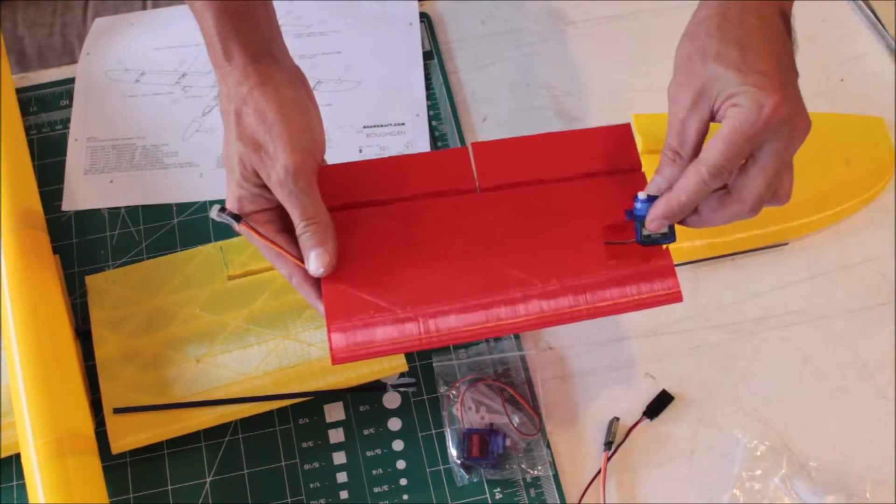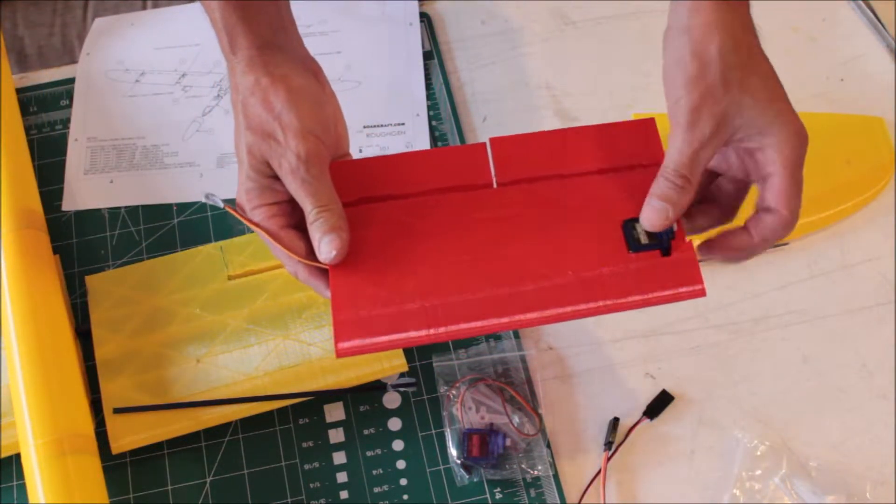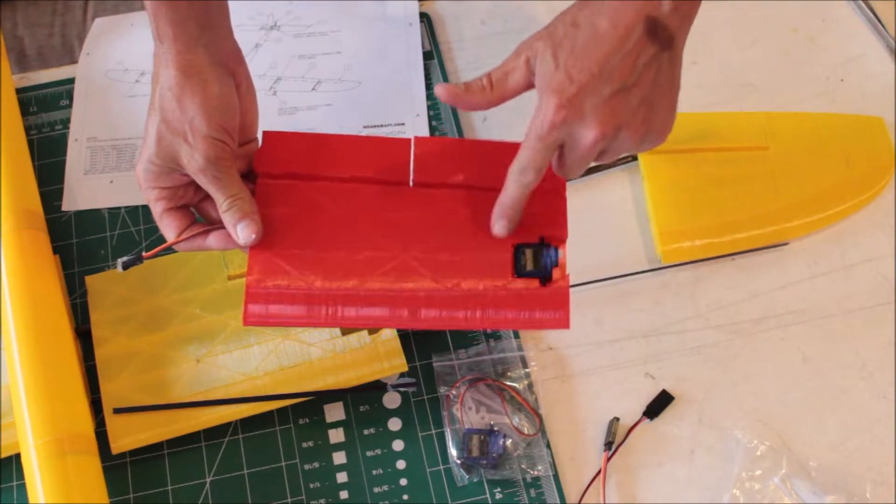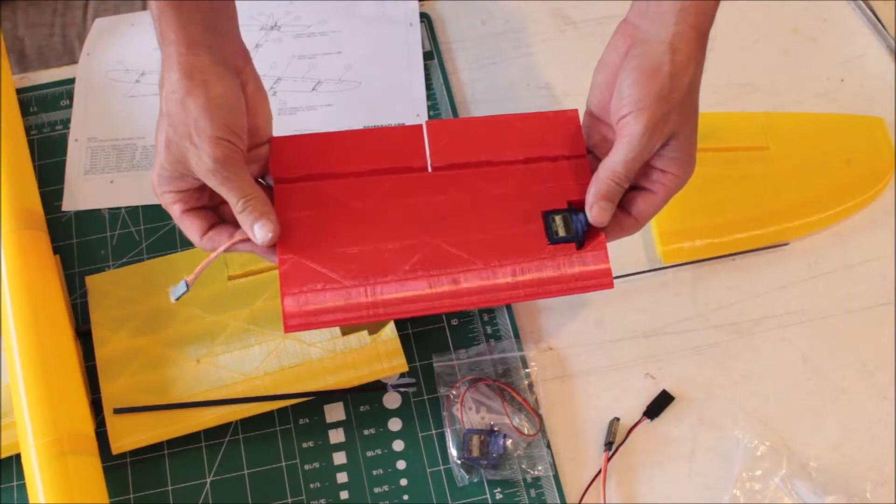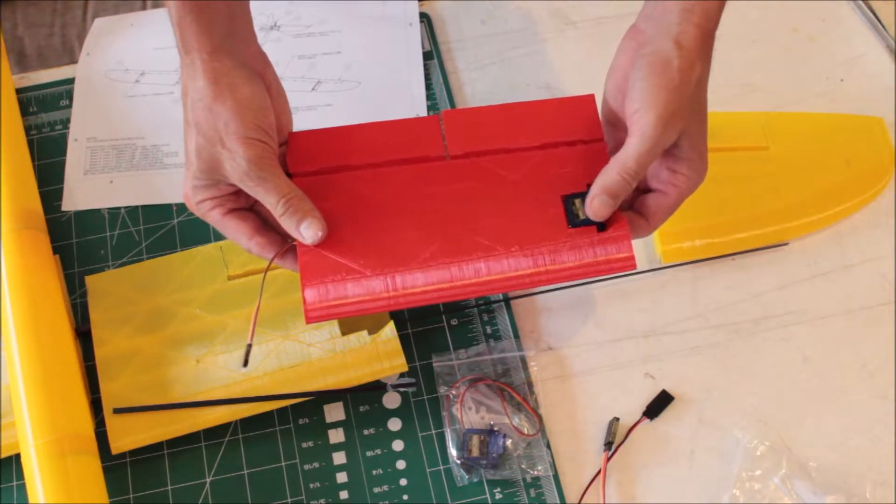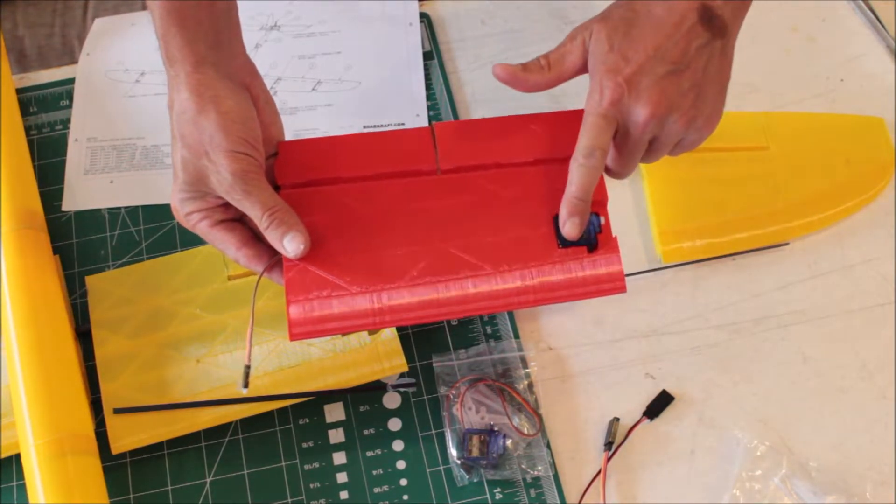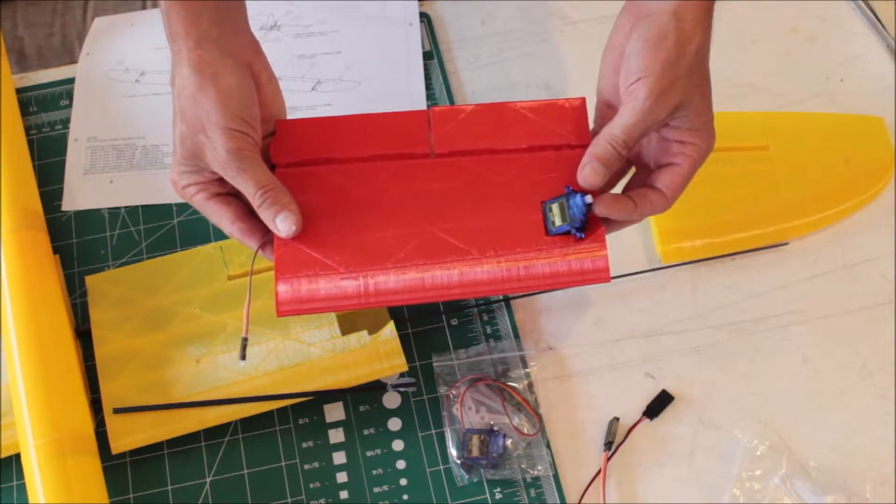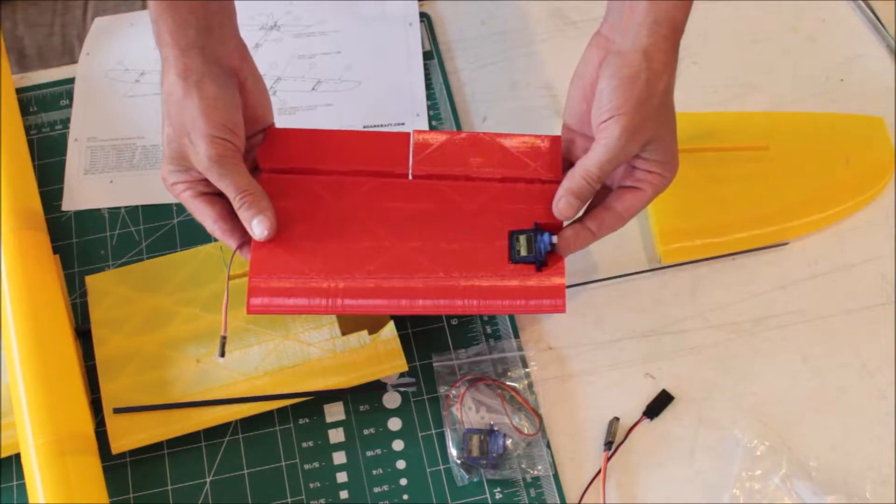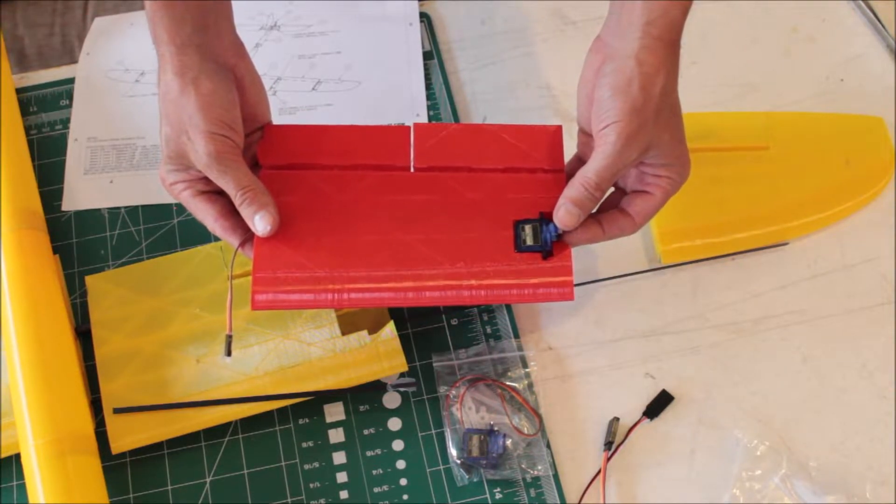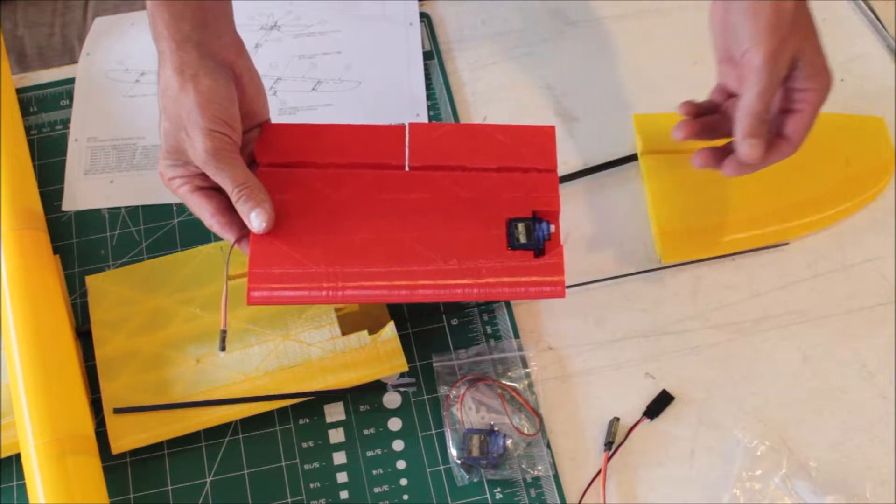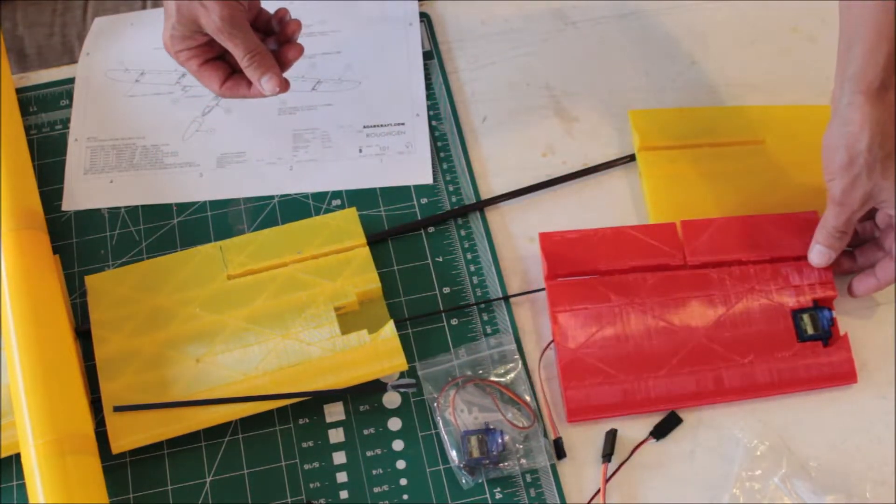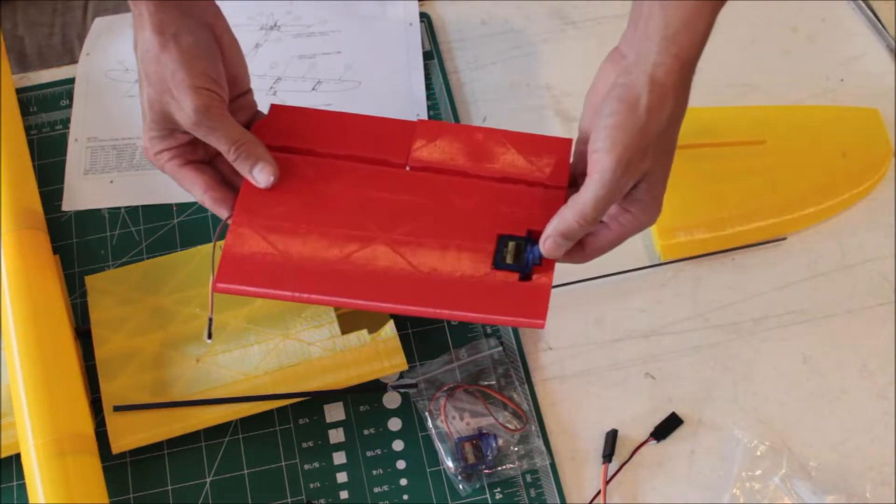The aileron goes in like that, and this will be secured with the servo cover. You can glue the servo to the servo cover and then screw the servo cover down so that you can access the aileron or the servo control horn, or you can just glue it in place.